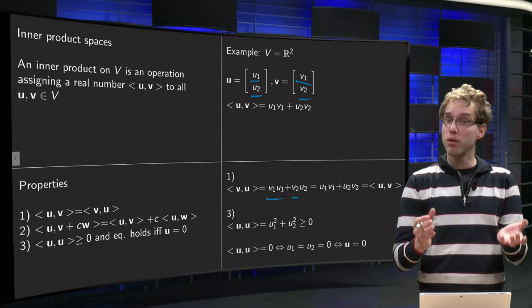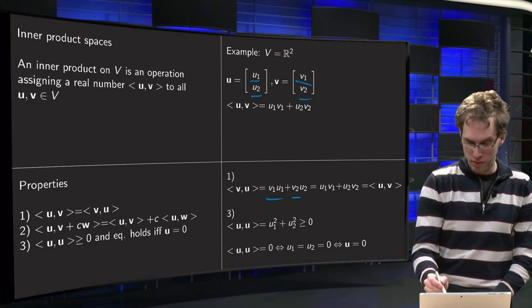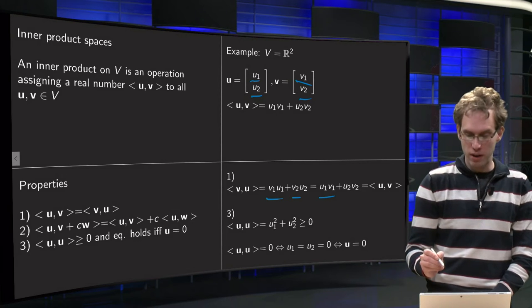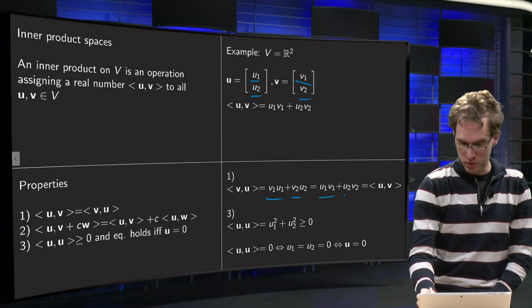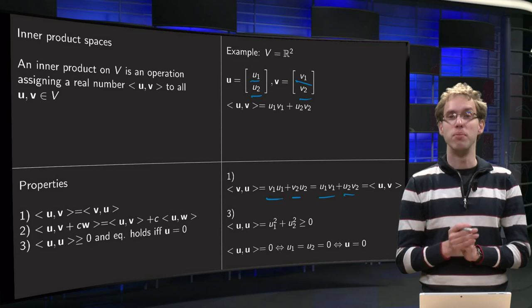But all of those are just scalars so you can inverse the order. So that means that v₁u₁ equals u₁v₁, and v₂u₂ is just u₂v₂. So that is the same as <u, v>. You see symmetry holds.